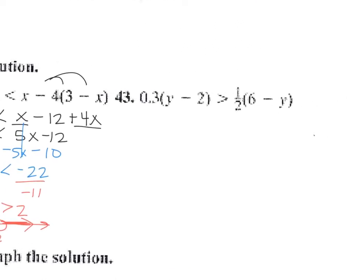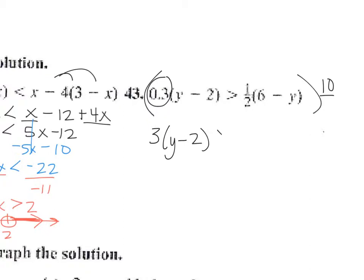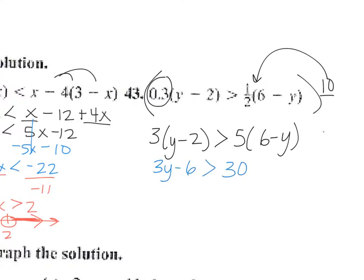Number 43: I'm going to multiply both sides by 10 to clear the decimals and fractions. Multiplying 0.3 by 10 gives 3, and 1/2 times 10 gives 5. So it becomes 3 times (y minus 2) greater than 5 times (6 minus y). Now I can distribute: 3y minus 6 greater than 30 minus 5y.